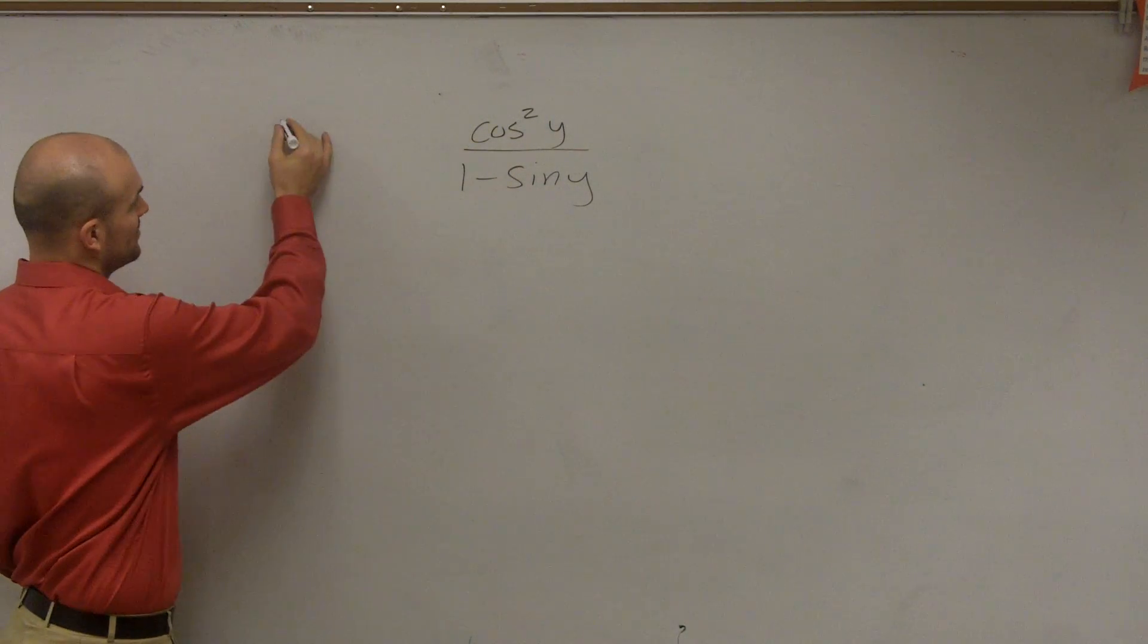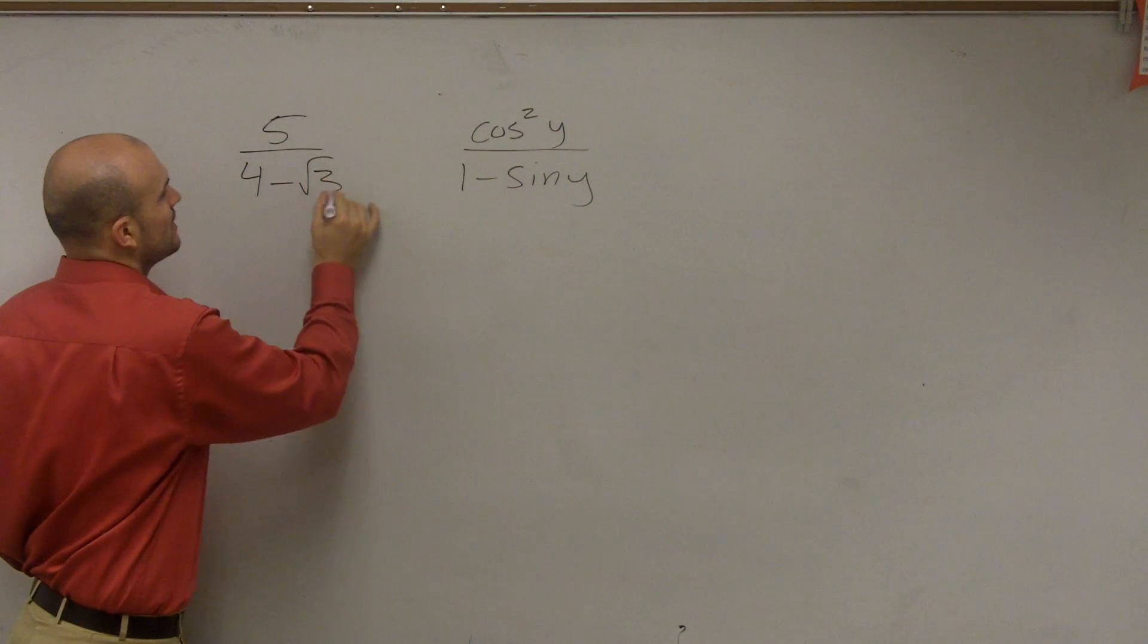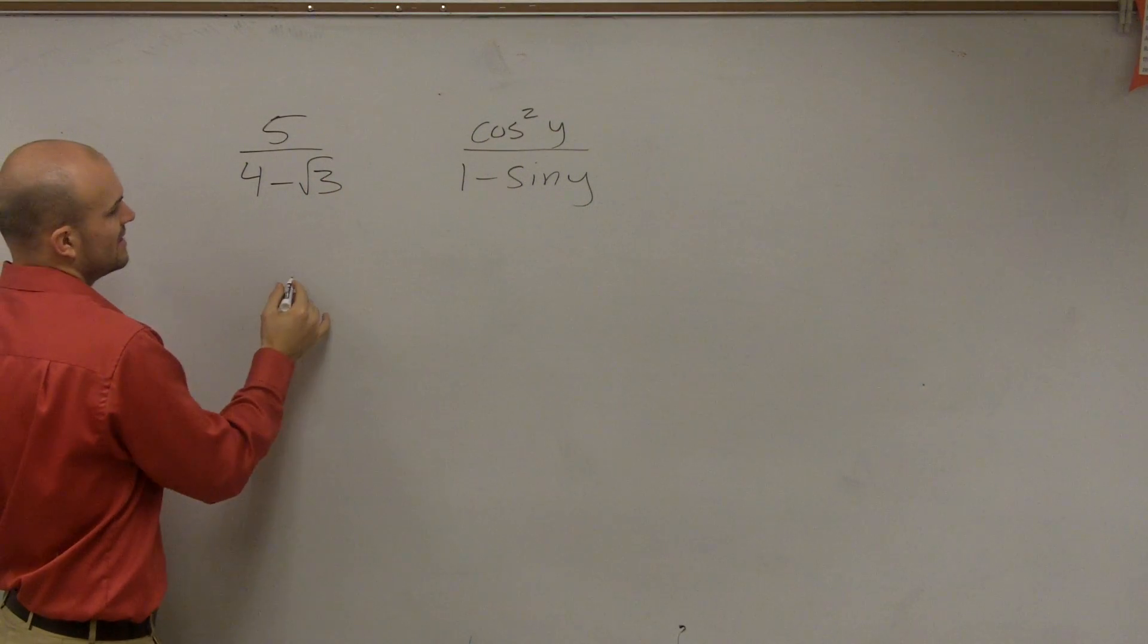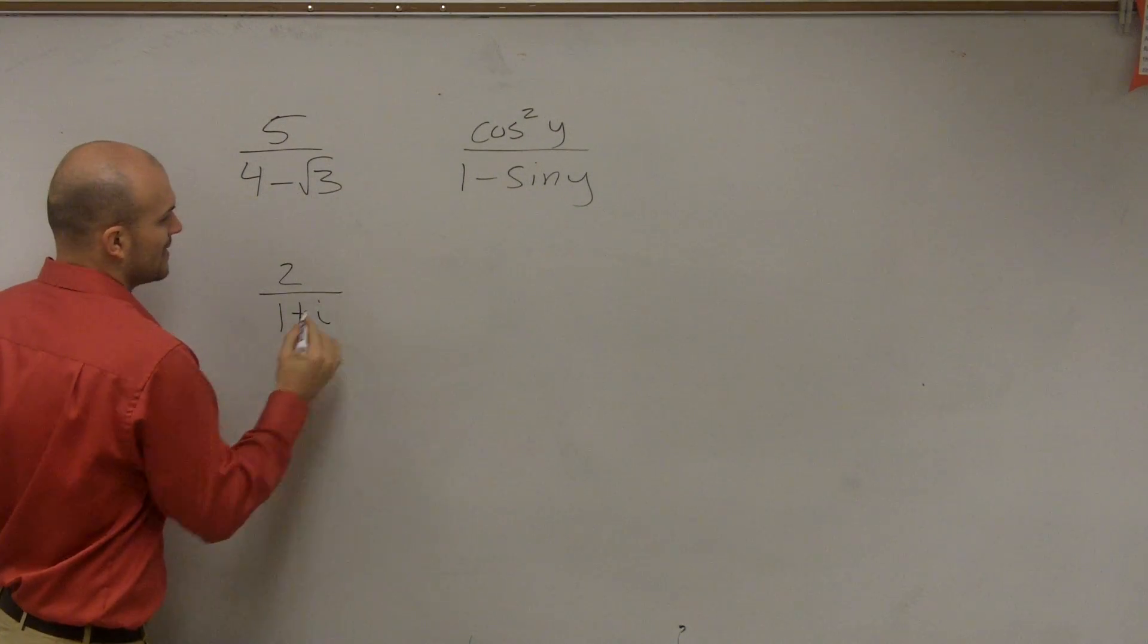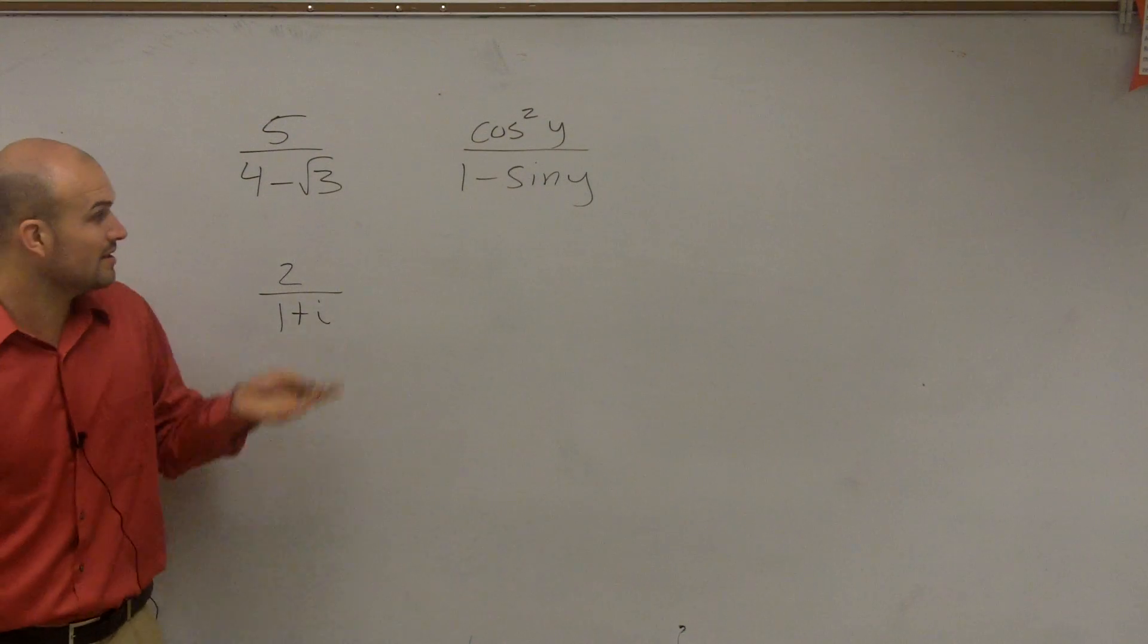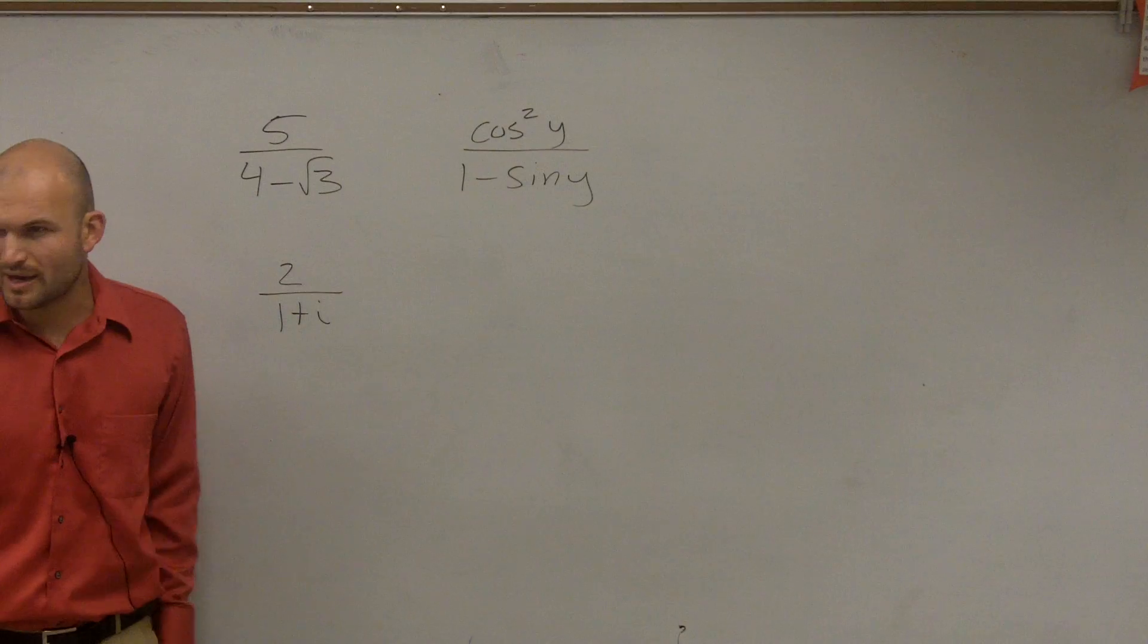Ladies and gentlemen, when I said simplify something and I had 5 divided by 4 minus square root of 3, or let's say I did a problem that I had 2 divided by 1 plus i. And when we said simplify these, we didn't want to divide by a rational number or an imaginary number. So you remember what did we multiply to get rid of our denominator?